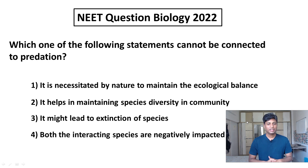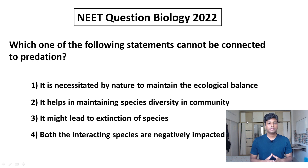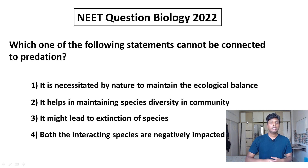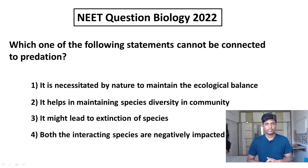Let me read the options. Option one: it is necessitated by nature to maintain the ecological balance. Option two: it helps in maintaining species diversity in a community. Option three: it might lead to extinction of species. And option four: both the interacting species are negatively impacted. In this question we have to find the wrong option — something which is not connected to predation.